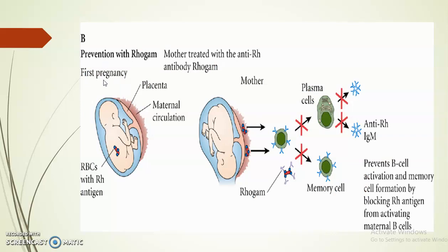Erythroblastosis fetalis can be prevented by administration of anti-Rh antibody — that is Rogam antibody — to the mother after the first delivery. These Rogam antibodies come and bind to the Rh positive RBCs of the fetus before they can sensitize the mother's immune system. All the Rh positive RBCs are neutralized by the Rogam antibody so there are no free Rh antigens to sensitize the mother's immune system. Therefore, there is no immune response produced, and the second baby will be safe.